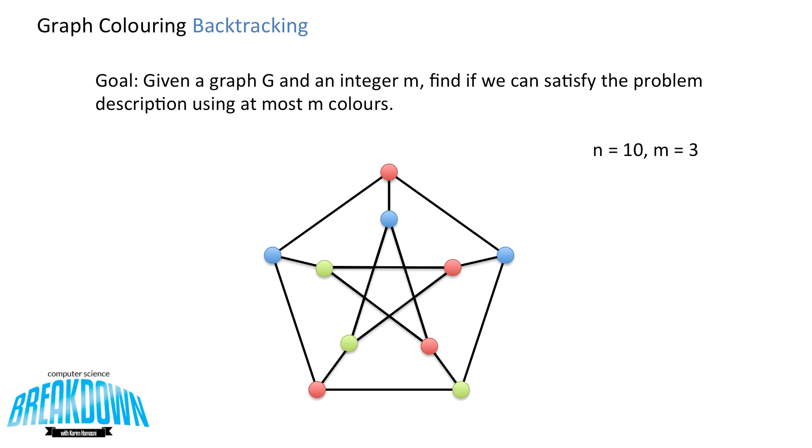The problem description is that if we were given a graph g and an integer m, we want to find if we can satisfy the problem description using at most m colors. So this pentagon star problem has 10 nodes, so its n value is 10 and m is equal to 3.